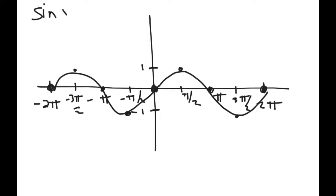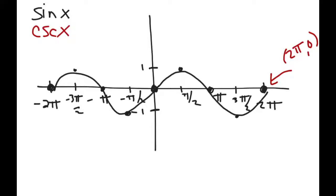Remember that cosecant is the reciprocal of sine. So think about this ordered pair at 2pi comma 0. If I want to find the point that lies on the cosecant graph, I'm going to take the reciprocal of the output. The output is 0 — the sine of 2pi is 0. What's the reciprocal of 0? The reciprocal of 0 is undefined, which means on the cosecant graph there's going to be an asymptote there.